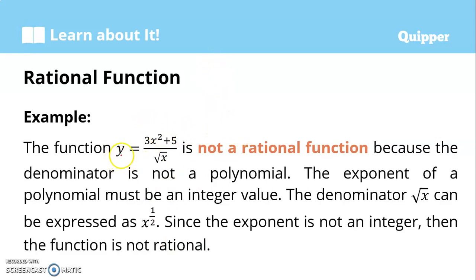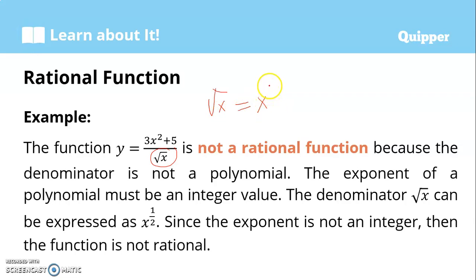Another example: the function y = (3x² + 5) / √x is not a rational function. The denominator is not a polynomial because when we simplify √x in fraction form, it is equal to x to the power of 1/2. Since 1/2 is not a whole number, the denominator is not a polynomial. Thus, this function is not a rational function.